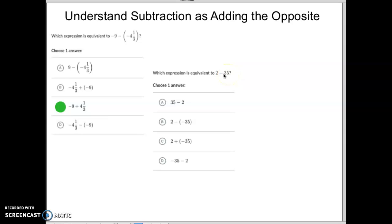Well, if we don't like subtraction, what's the opposite of minus 35 would be plus negative 35. Because what's the opposite of positive 35? Negative. So 2 plus negative 35.